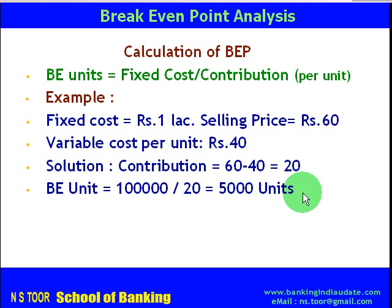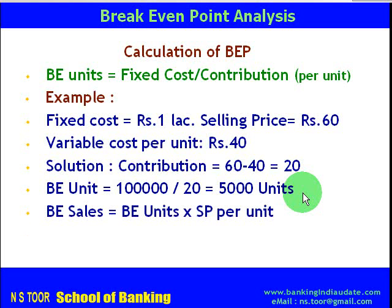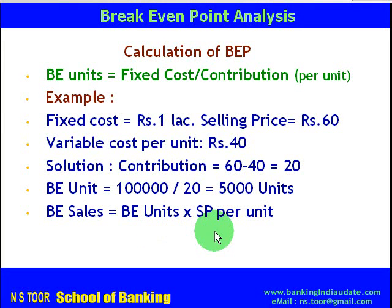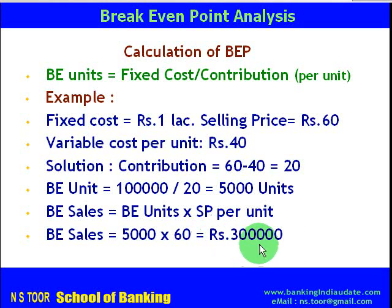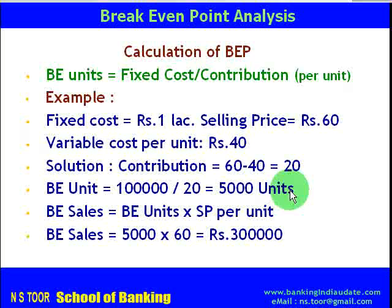When we calculate breakeven this way, we get the quantity. We can also convert this quantity into breakeven sales value. Breakeven sales value is equal to breakeven units multiplied by selling price per unit. So 5000 breakeven units multiplied by Rs 60 selling price gives breakeven sales of Rs 3 lakh.